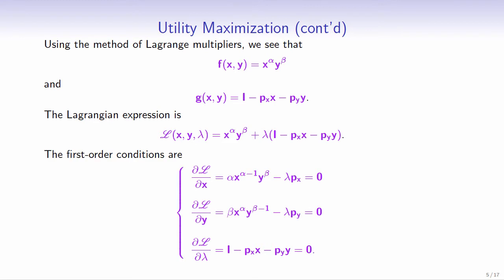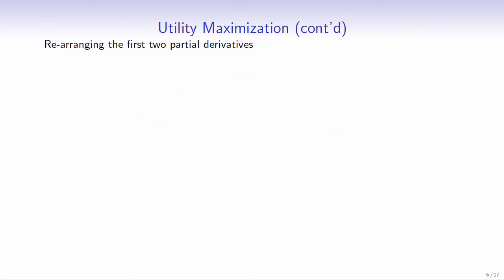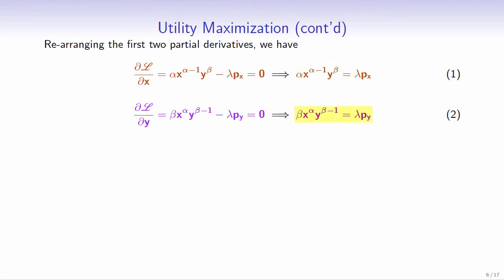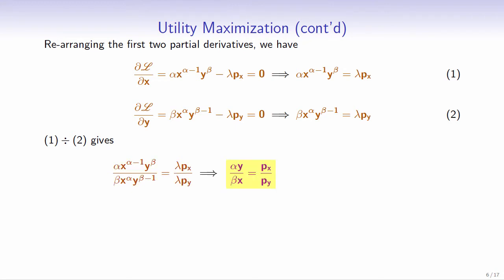Setting the partial derivatives equal to 0 yields the first order conditions. Rearranging the first two partial derivatives, we have alpha times x^(alpha−1) times y^beta equals lambda times the price of good x, and beta times x^alpha times y^(beta−1) equals lambda times the price of good y. Dividing equation 1 by equation 2 gives alpha times y over beta times x equals the price of good x over the price of good y. Solving for the expenditure share of good y: py times y equals (beta/alpha) times px times x.